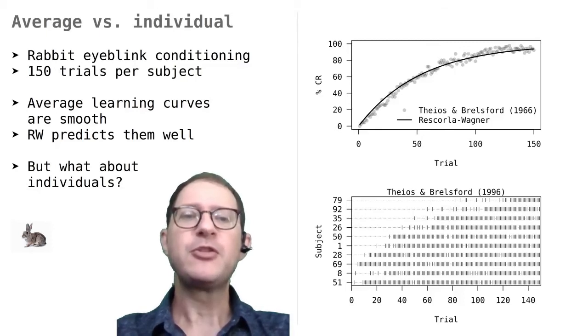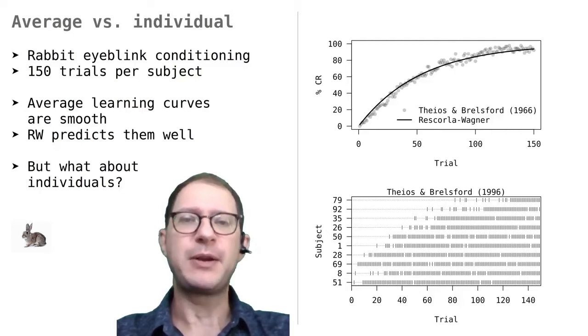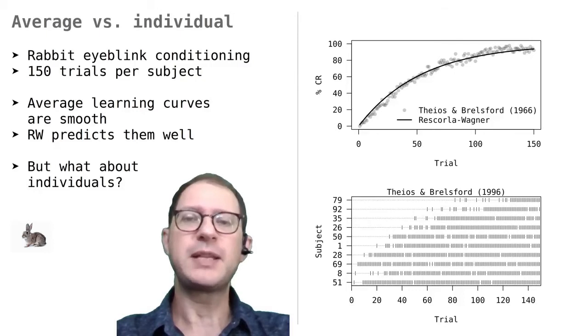The bottom image shows what some of the rabbits did over the 150 trials of the experiment. The bars indicate trials with an eye blink. What's striking to see is that some rabbits started to blink right away to the sound that was used as a CS, while other rabbits did not respond until 50 or even 80 trials into the experiment.